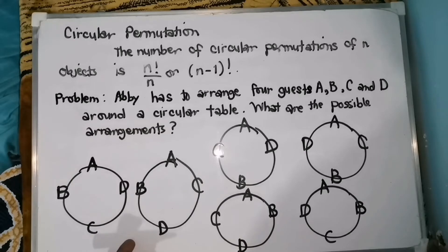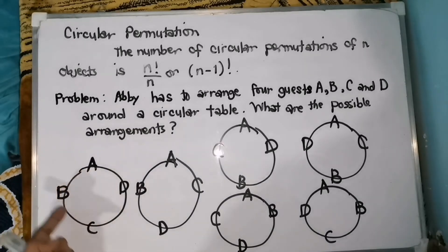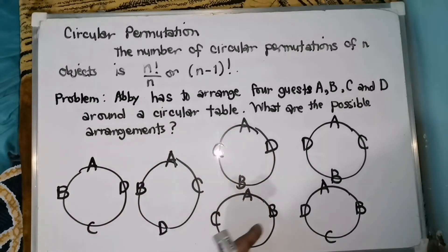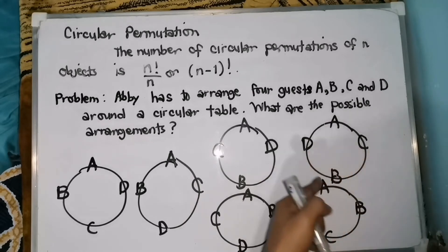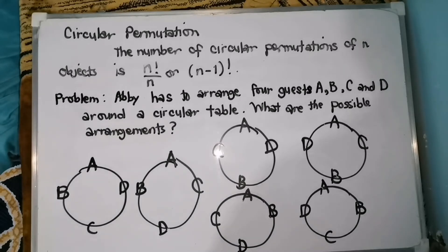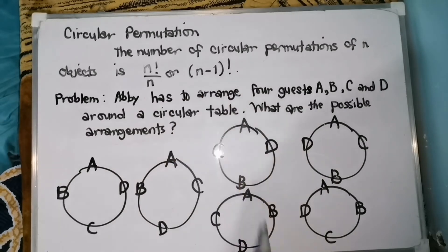That is A, B, C, D — A, B, D, C — A, C, D, B — A, C, D, B — A, D, B, C — and A, D, C, B. So, note that four permutations for the four guests were indistinguishable. The results lead to this theorem. Kaya naman, nag-come up tayo sa formula na for us to find the circular permutation, gagamit tayo ng the quantity of n minus one factorial.